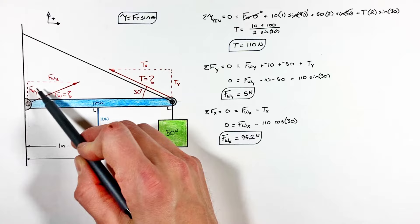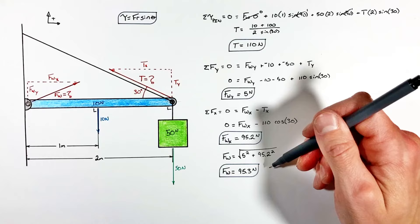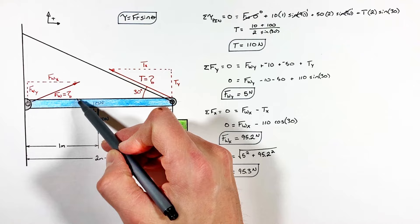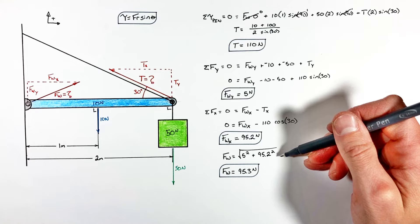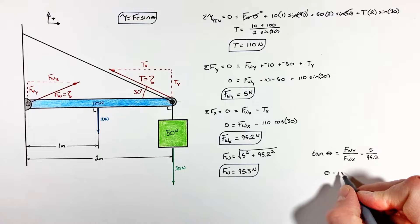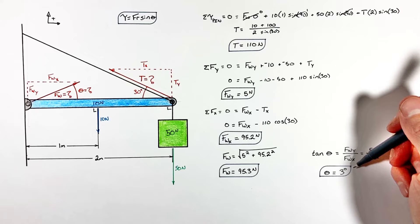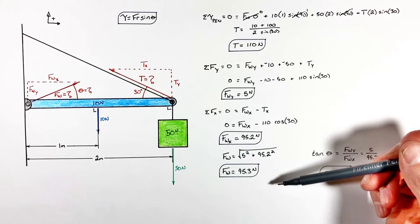To the right we have the wall force in the x-direction; to the left we have the horizontal component of tension, Tx, which is negative. Expanding Tx, we find the wall force in the x-direction is 95.2 Newtons. To solve for the total wall force we combine the two components using the Pythagorean theorem and find the wall force is 95.3 Newtons. Taking the inverse tangent of the two components gives us the direction: the wall force acts at 3 degrees relative to the horizontal. That's how we solve for the forces acting on a beam suspended by a cable.